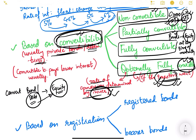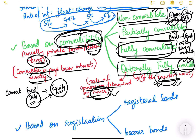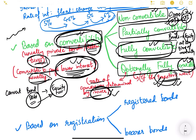In optionally fully convertible bonds, the rate of conversion is determined by the issuer, but the option to convert is exercised by the investor. Keep in mind that convertible bonds are usually debentures — partially convertible debentures, fully convertible debentures, optionally fully convertible debentures — not bonds per se. Also, convertible bonds usually pay lower interest because investors benefit from the potential to convert to equity if the share price rises significantly.